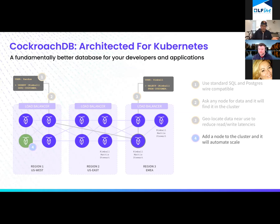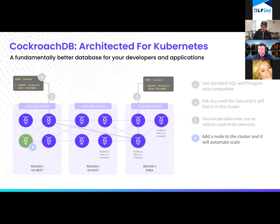On the topic of scale: simply spin up a node pointed at the cluster. CockroachDB will consume that new node and balance all the data throughout the cluster so we can balance for volume of transactions or volume of data. There is no manual sharding involved.